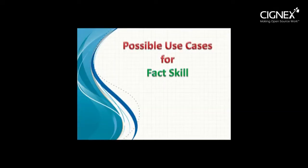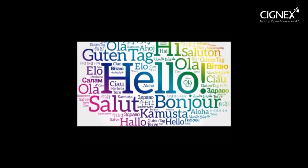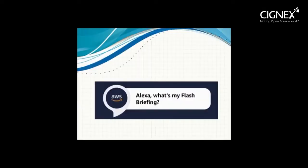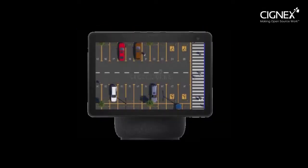The architecture of the fact skill is lightweight and can be used for multilingual, real-time voice notifications — for example, policy updates, flash briefing, etc. One could also add search features and make a useful skill such as a finding-a-parking-space skill.